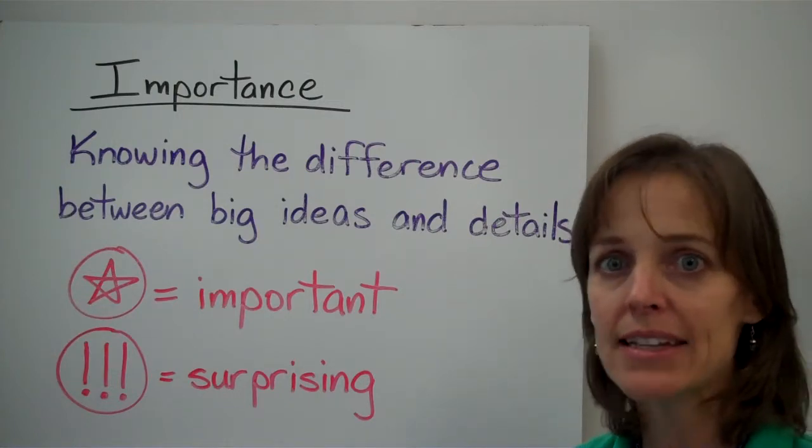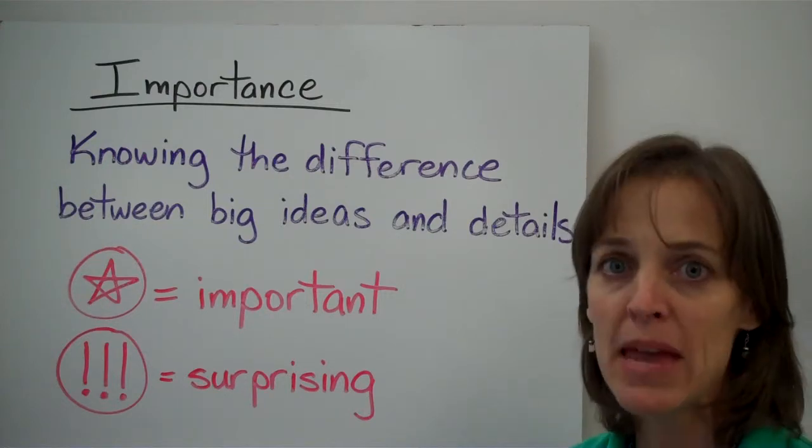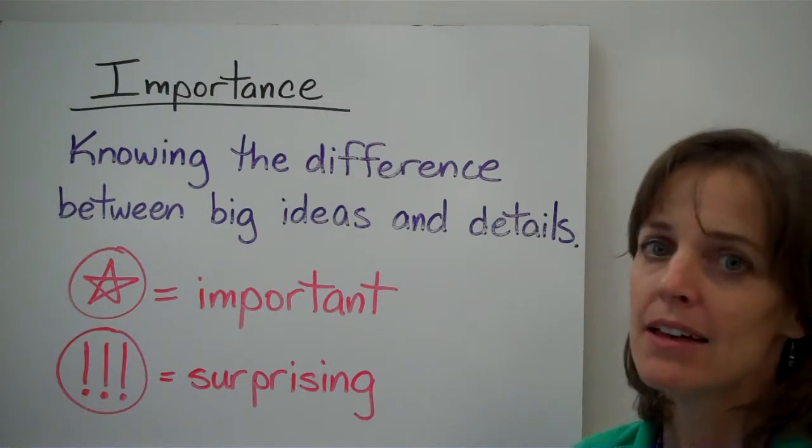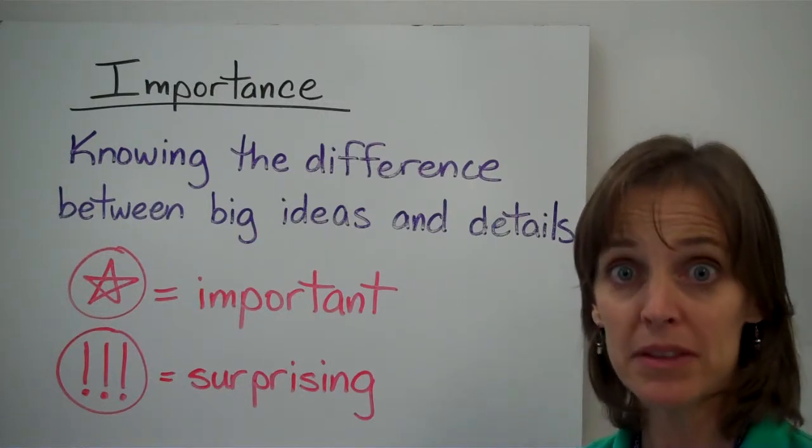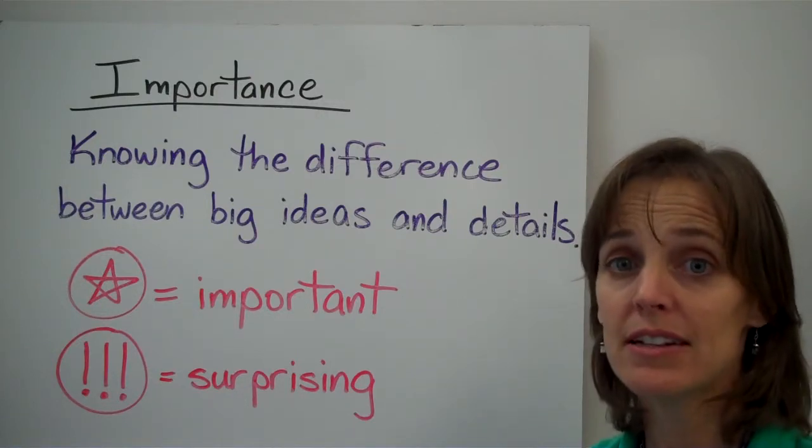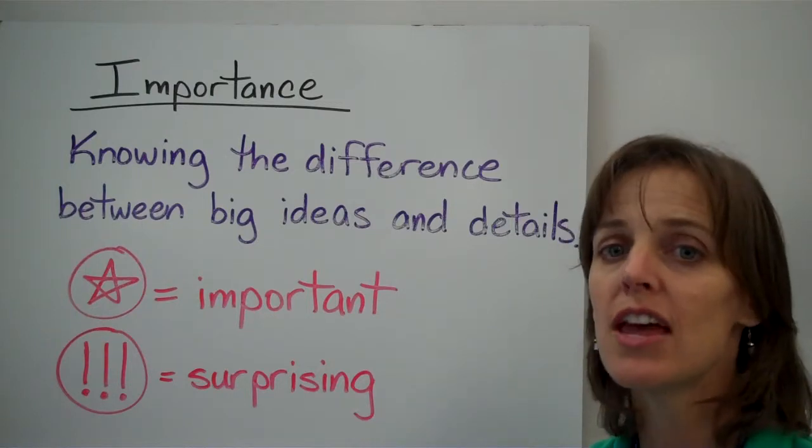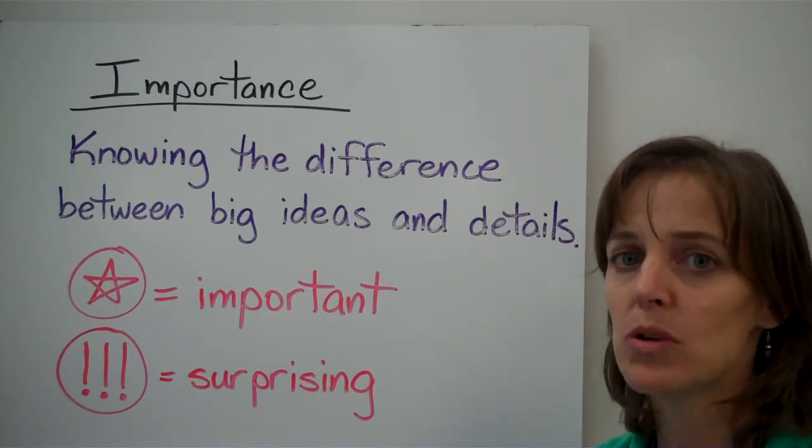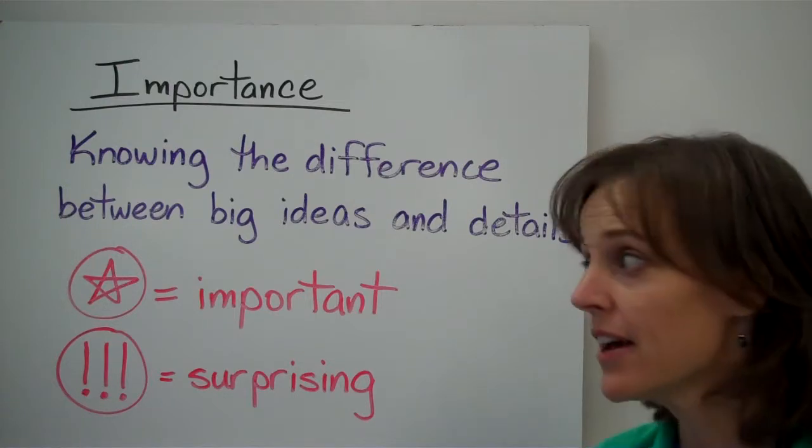It's sort of like generalizing or coming to the main idea. What's the most important here? I think they need some help with this at home. This is one of the things that while you're reading Freckle Juice, you should think and talk about together: what's important and what is a detail.